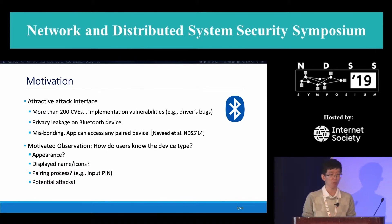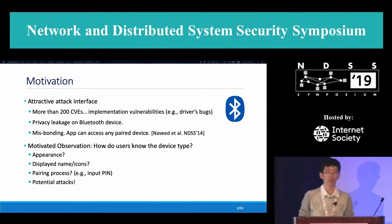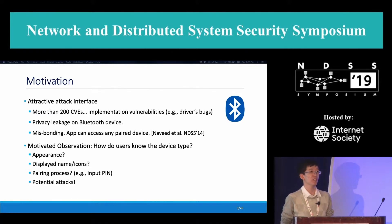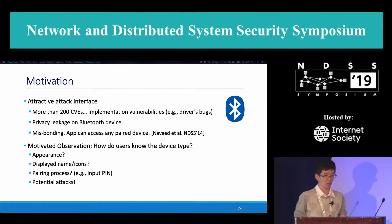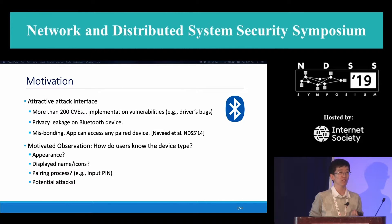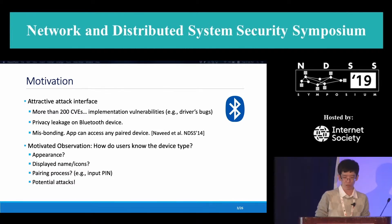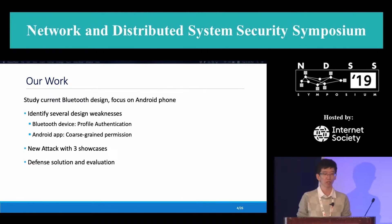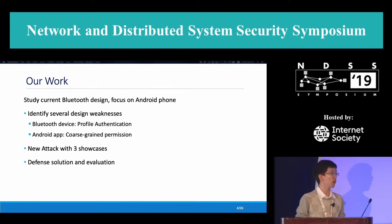I want to highlight a related work about Bluetooth design problems. They found that an application on the phone can access any paired devices, even a third-party device. So here in our work, the motivated question is: how do users identify the device type, or how do users know the exact behavior of the device, since the Bluetooth device may provide very powerful ability? The appearance and display names are totally unreliable, and even the pairing process is not helpful for that purpose, so there could be some potential attacks. In our work, we further study the current Bluetooth design, come up with three attack cases, propose a defense solution, and evaluate it on a real Android phone.